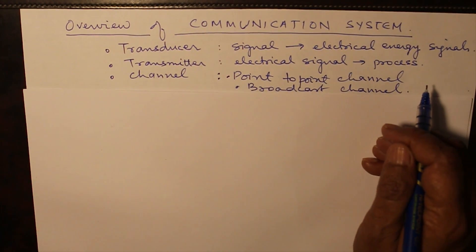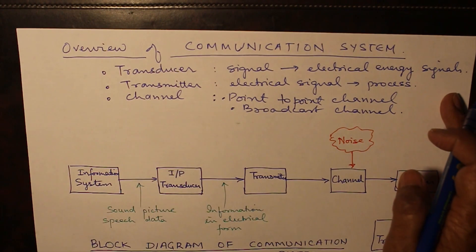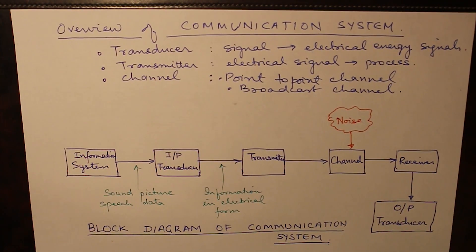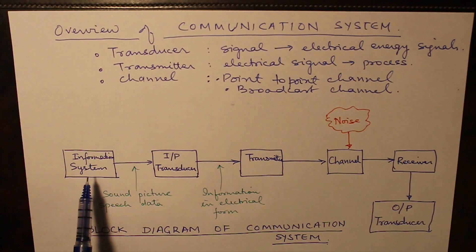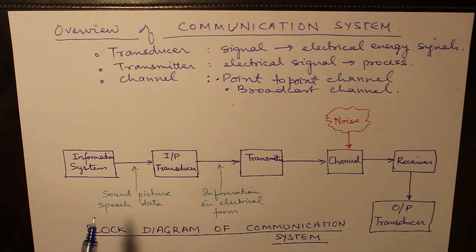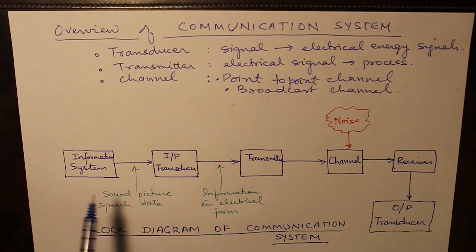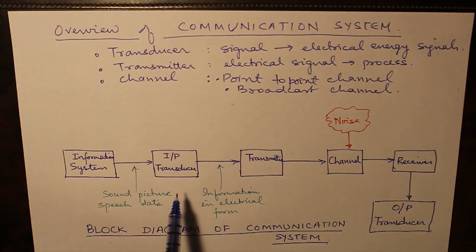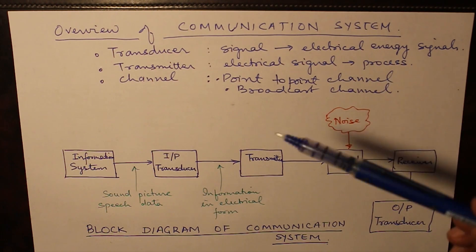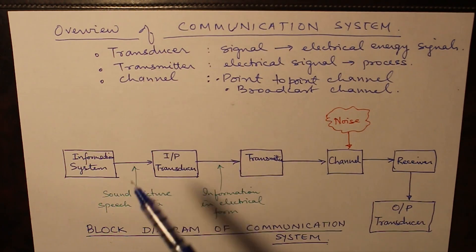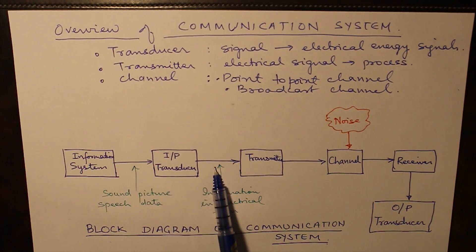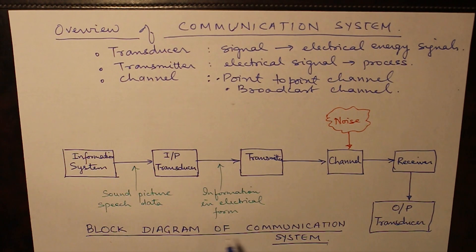Now let us see how the block diagram looks. We have an information source where information is recorded or captured. The information can be in the form of a picture, sound, or any clip. That information is sent to the input transducer, which converts an analog signal into an electrical energy signal. This input transducer converts the input signal to an electrical signal, giving us information in electrical form.